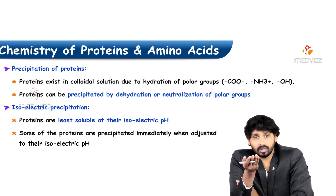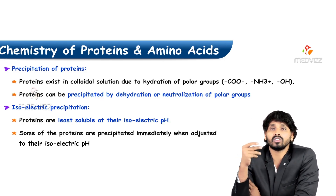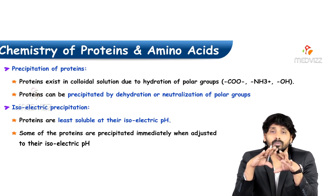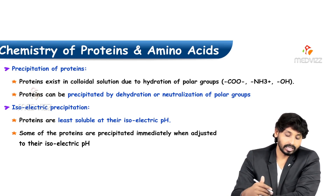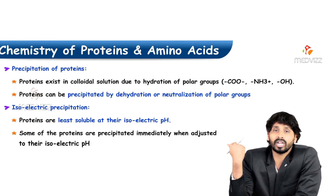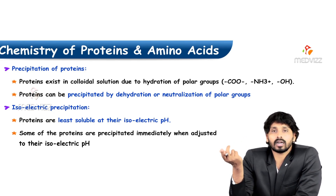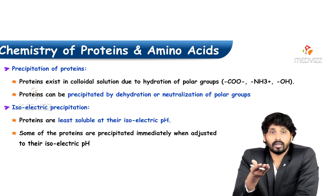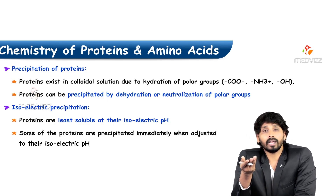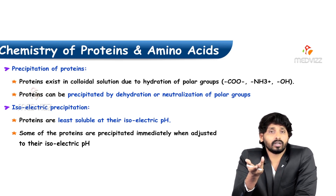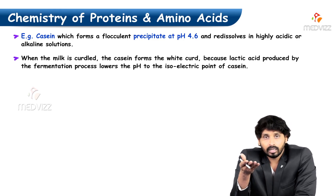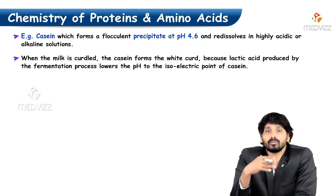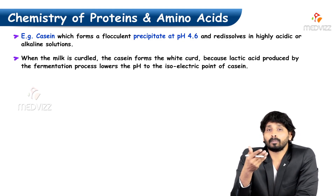Precipitation of proteins — proteins exist in colloidal solution due to hydration of polar groups facing outside; they will be hydrated. Proteins can be precipitated by dehydration, meaning if you remove the water molecule from the protein, they lose solubility and start getting precipitated. Casein precipitates at pH 4.6 and re-dissolves in highly acidic or alkaline solutions. When milk is curdled, casein forms the white curd because lactic acid produced by lactobacillus brings the isoelectric point of casein.